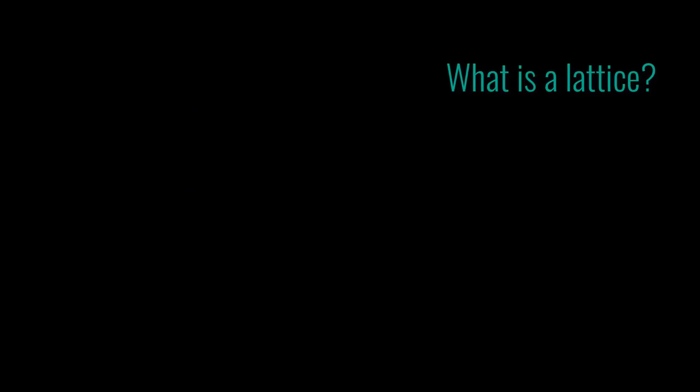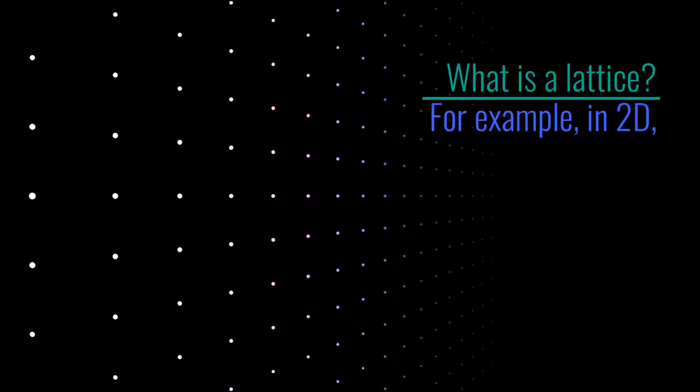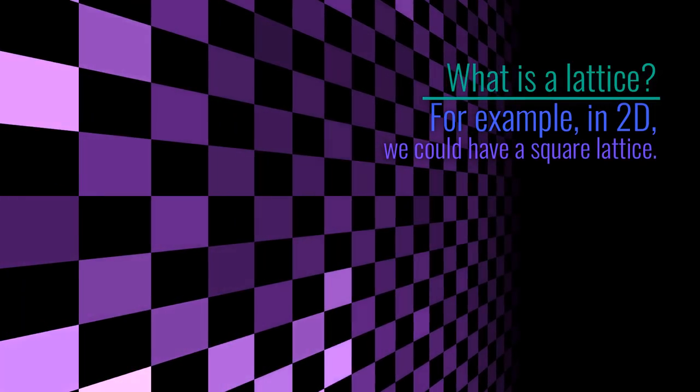Well a lattice, we recall, just means a regular arrangement of points. So for example in two dimensions we could have a square lattice, like the points on the vertices of a chessboard and go on forever.